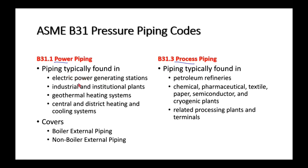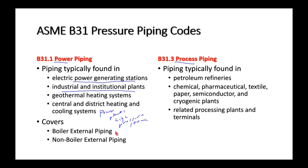The power piping code covers what you find in power generation stations and industrial or institutional plants — basically power plants that generate high-pressure steam. This covers boiler external piping and non-boiler external piping. The process piping code covers petroleum refineries, chemical, pharmaceutical, textile, pulp and paper, semiconductor, and cryogenic plants — basically processing plants.